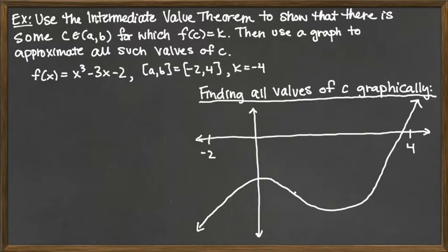In this example, we're going to use the Intermediate Value Theorem to show that there is some C in the open interval (a,b) for which f(C) is equal to K. That statement is really the conclusion of the Intermediate Value Theorem, so we are first going to have to show that all of the hypotheses are met so that we get the conclusion for free.